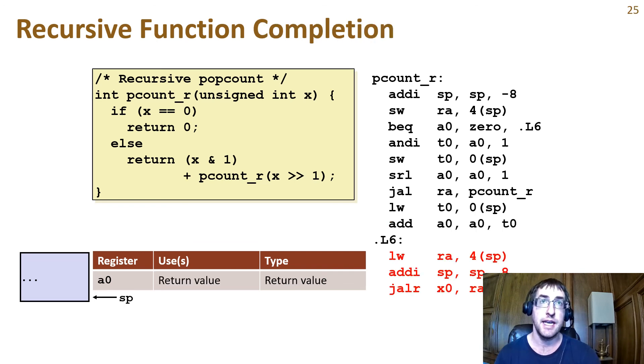Just like with the base case, we have to restore the return value from the stack and adjust the stack pointer back to the top of the caller's frame, and then we can return. You may like to walk through a small example and keep track of the values in the stack and registers. For example, try to track through what happens when pcount_r is called with an initial argument of 4.